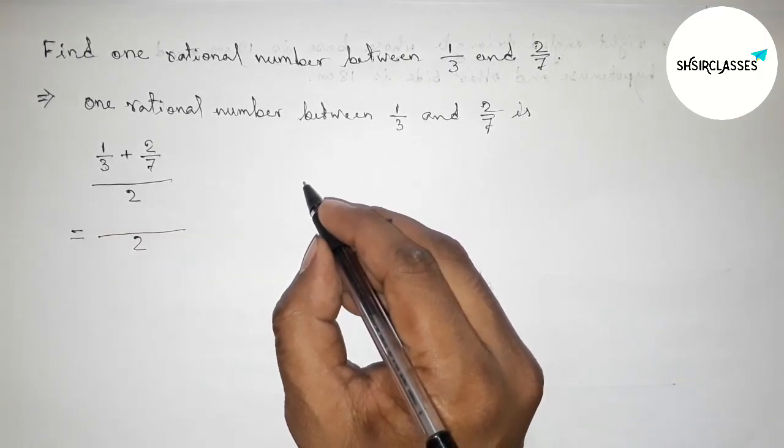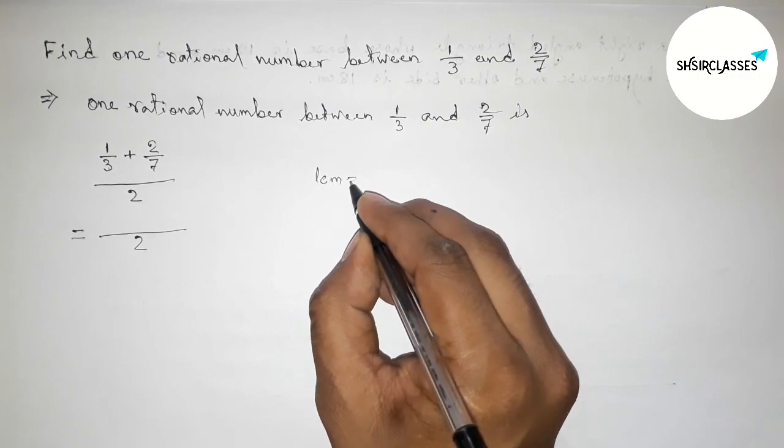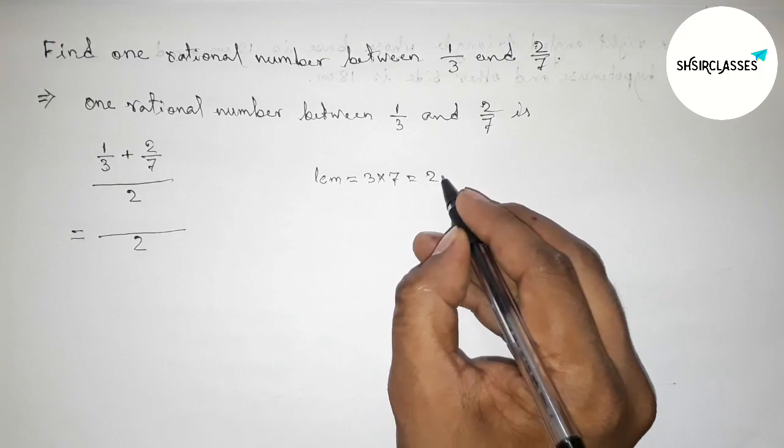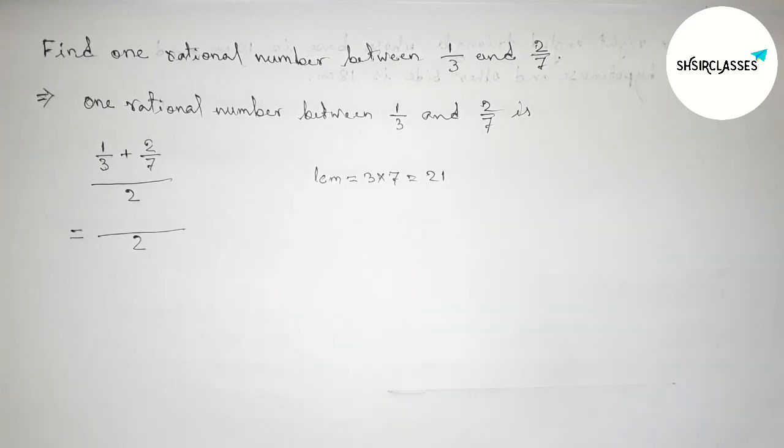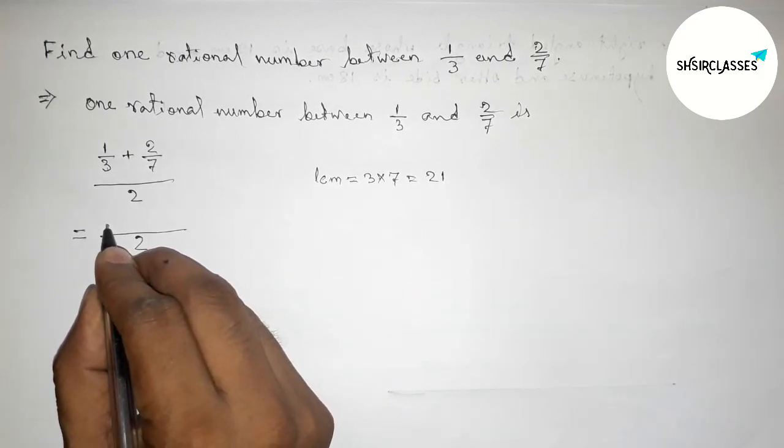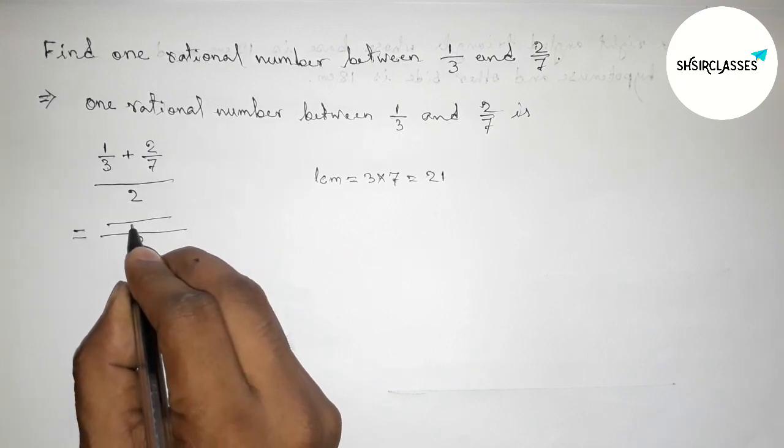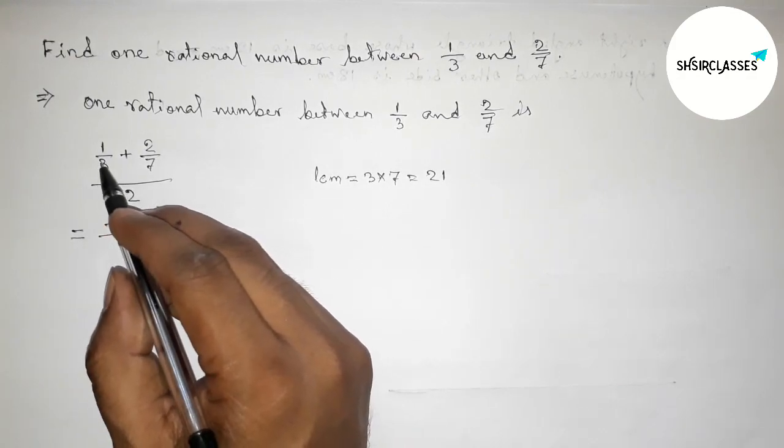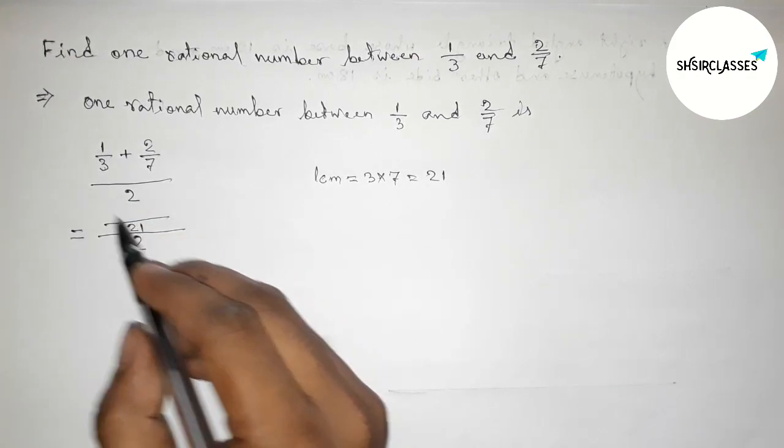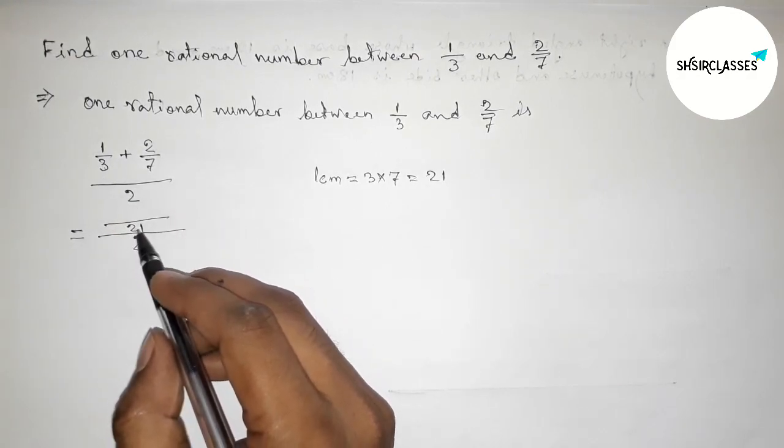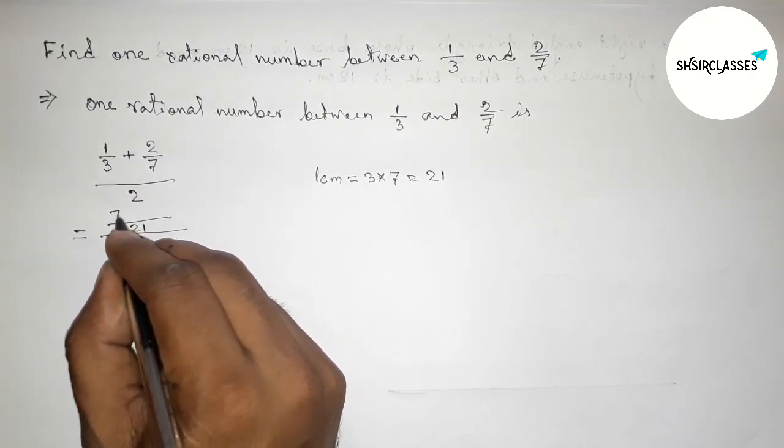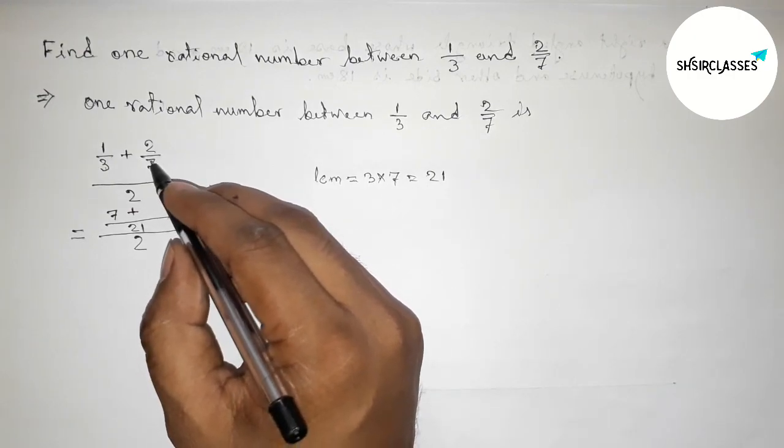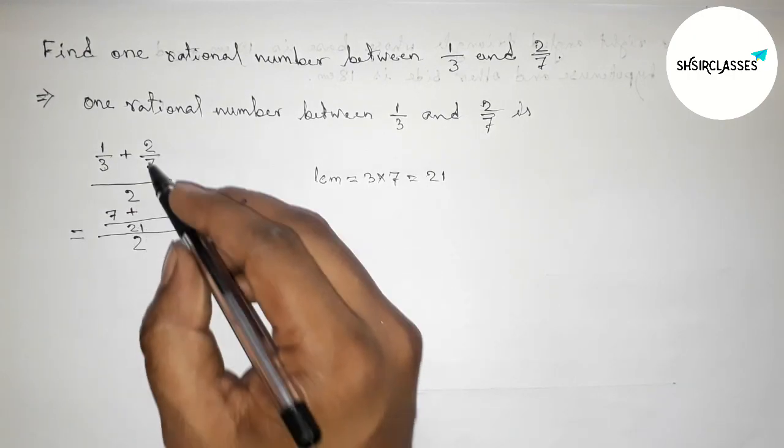Now finding the LCM between 3 and 7. Here 3 and 7 are prime to each other, so their LCM will be the product: 3 times 7 equals 21. So now write down here 21. Now dividing 21 by 3: 7 times 1 equals 7. Dividing 21 by 7: 3 times 2.